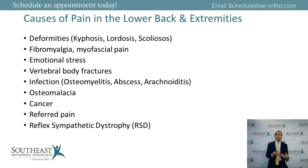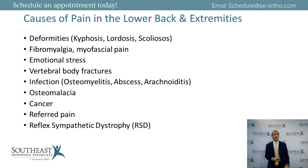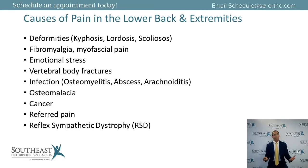Referred pain is another common cause — disc problems can refer into the hip and groin. Radiating pain is more nerve-related and goes past the knee. Complex regional pain syndrome and reflex sympathetic dystrophy are also causes of extremity pain. Post-herpetic neuralgia can cause very uncomfortable nerve pain that may be treated with a dorsal column stimulator if medications are insufficient. There are excellent non-narcotic medicines helpful for these chronic neuropathic conditions.